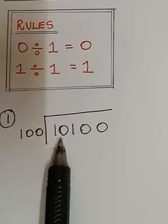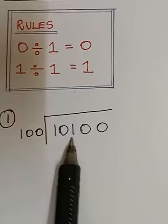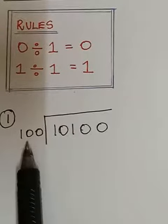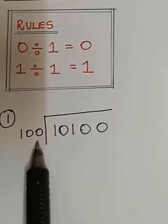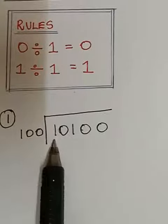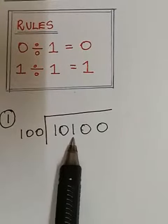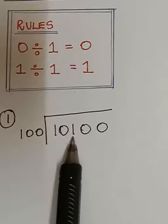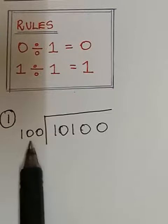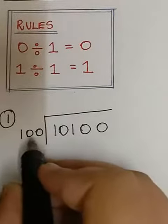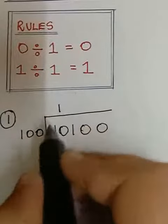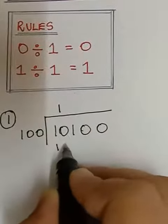So when you see the first three digits 101 is greater than 100 then you can start your division with considering the first three digits. So now 101 is greater than 100. So 100 multiplied with 1 will give you 100.